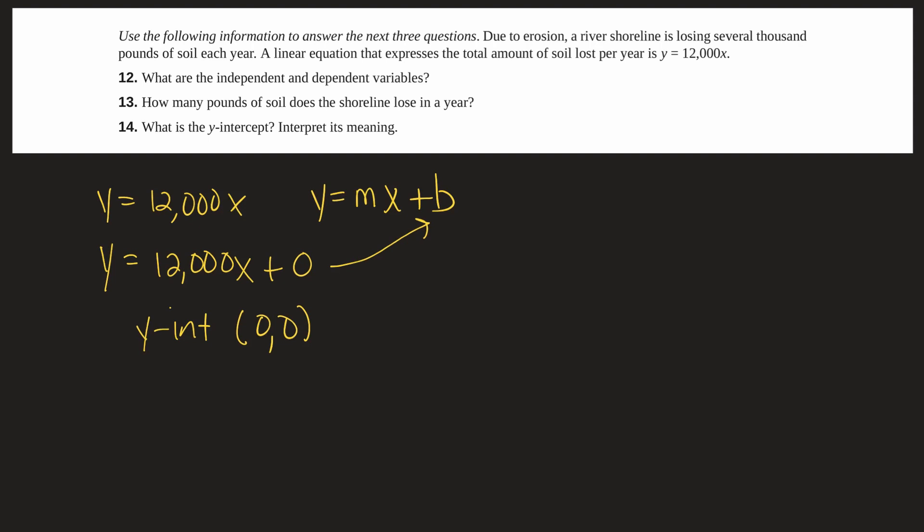Now it asks us what are the independent variables. So in this case like other problems we have done we're looking at something over time. It says each year several thousand pounds of soil each year. So what is the independent variable? What's changing? Well the independent variable is time in years.